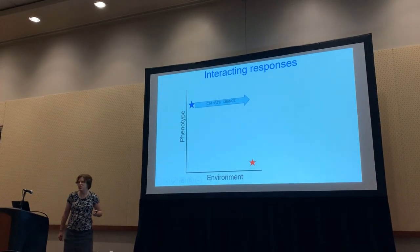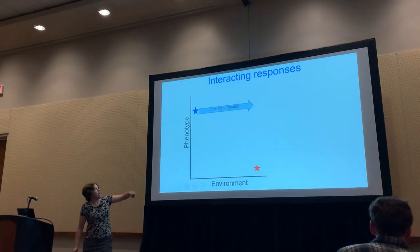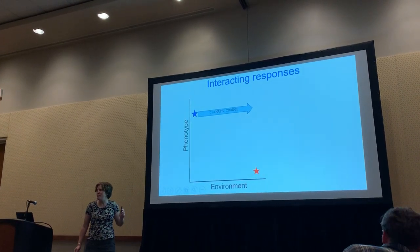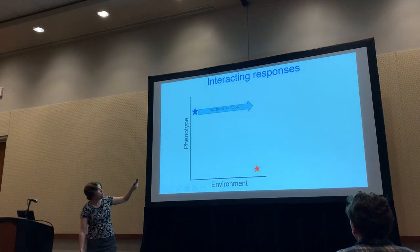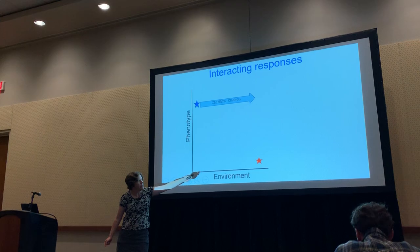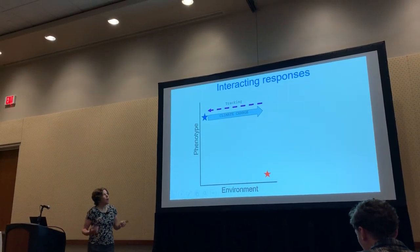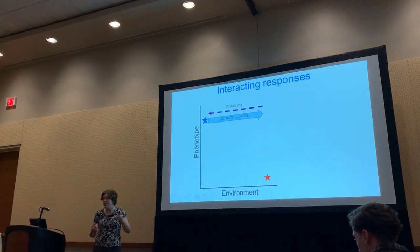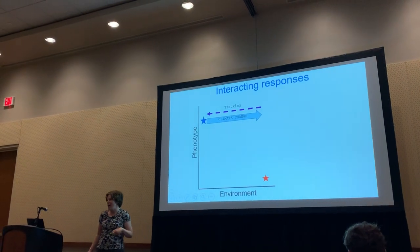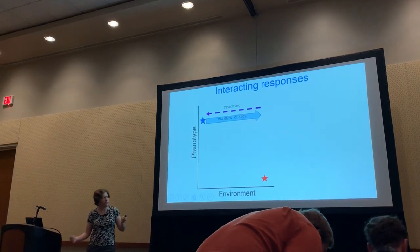We've been quite interested in interacting responses to climate change. We can imagine a phenotype that's optimally suited for a given environment, and we might have some sort of environmental change that shifts along the environment axis, causing the optimal phenotype to fall to a new level. Organisms can track through space or time — thinking about range and phenological shifts that are very well documented.